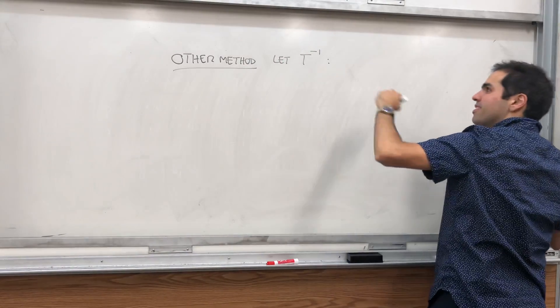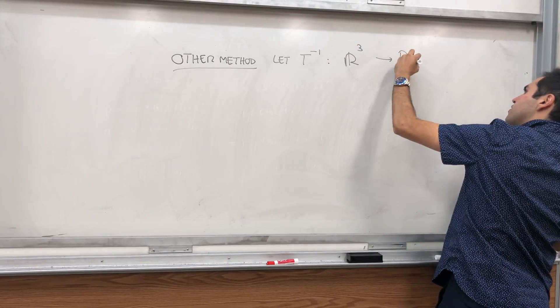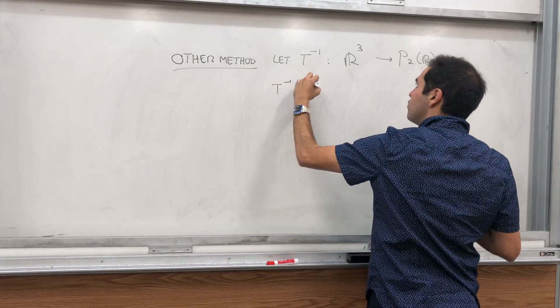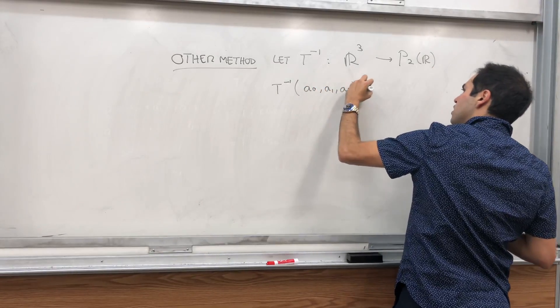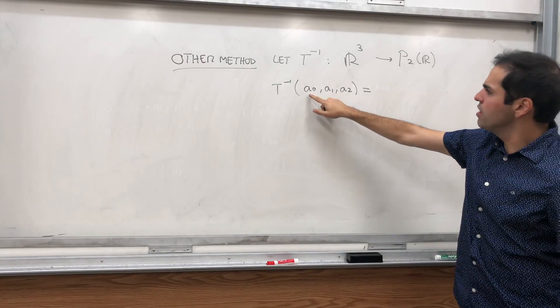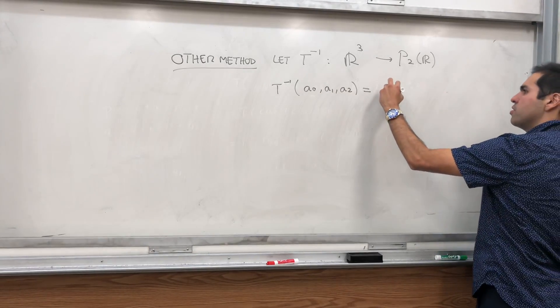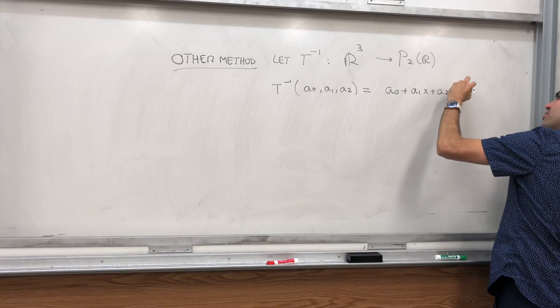What does T inverse do? T inverse of a number (a0, a1, a2), again I forgot to say, well we define T as before, we show that T is linear, and then let T inverse simply be the function that takes a triple as its input and spits out the polynomial a0 plus a1x plus a2x squared.